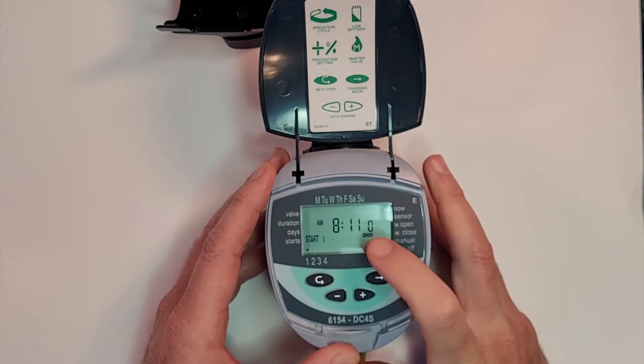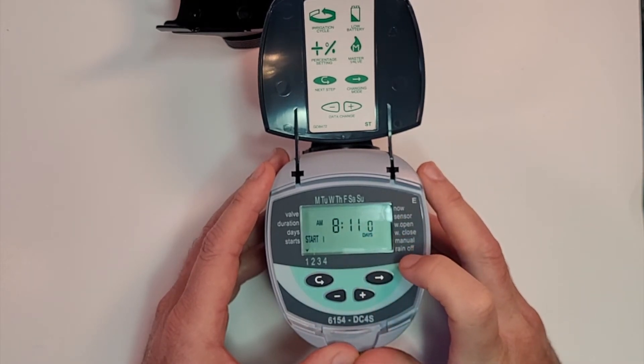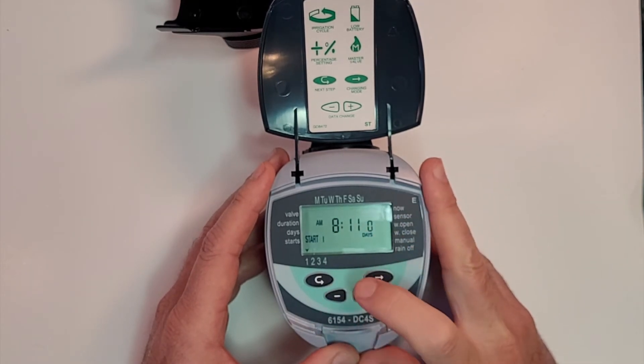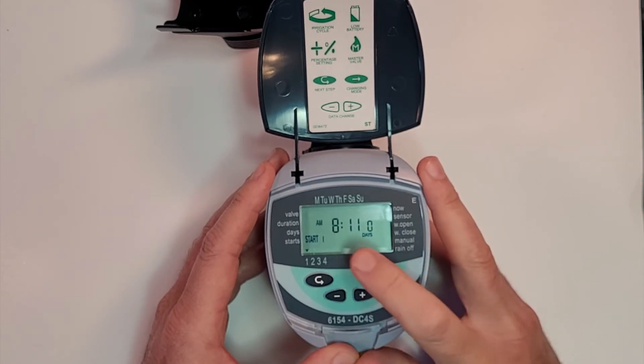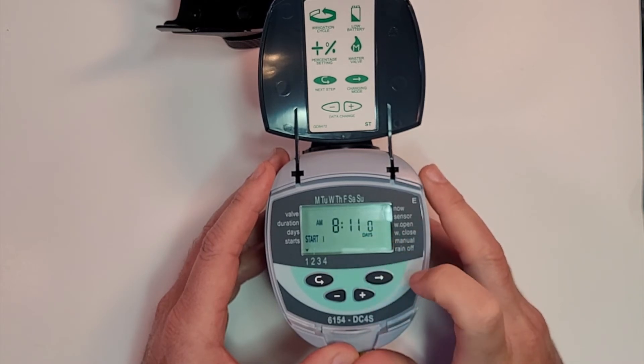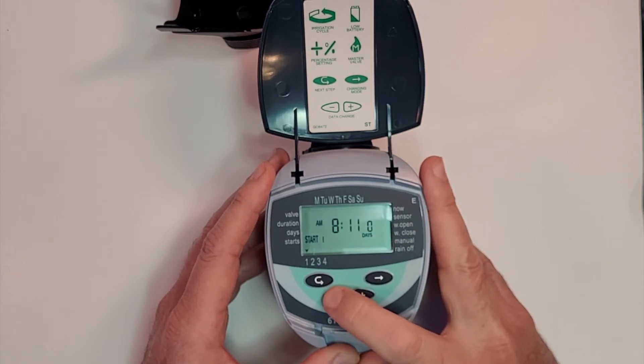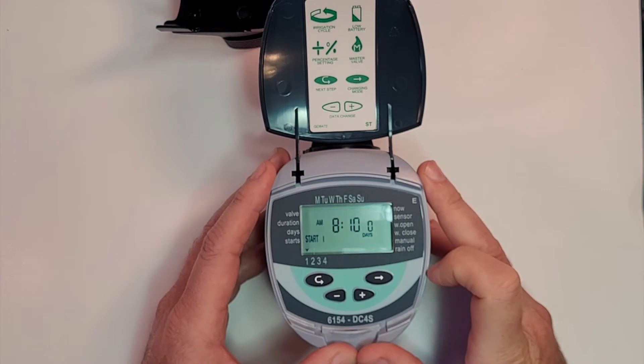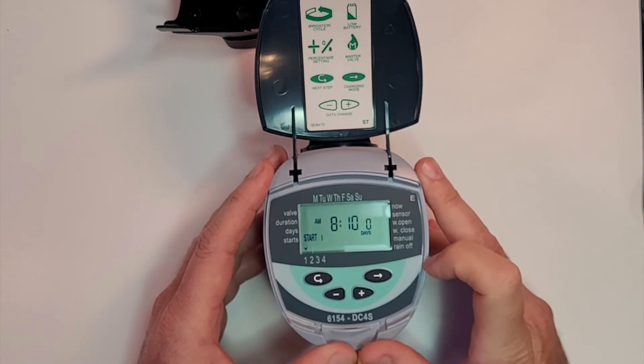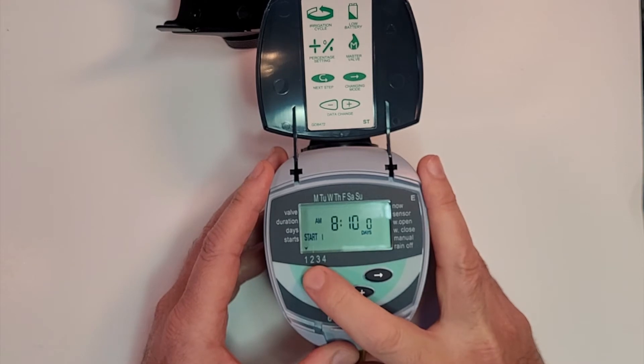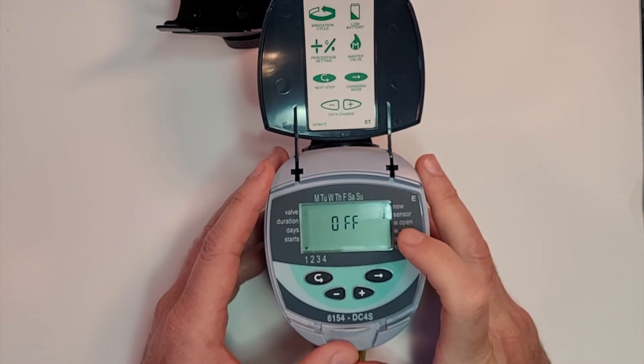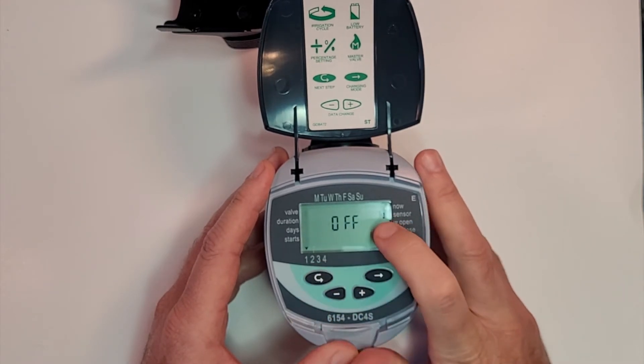Let's hit enter. Now what start time do we want to allow for this? We're going to right arrow to 8 AM, right arrow eight. It says 8:11, let's back it up. Now it will start every day at 8:10 AM. And we don't have a rain sensor.